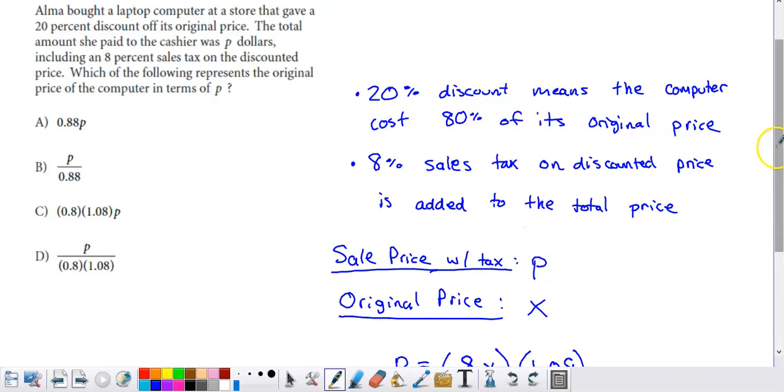So what I did is I kind of defined a new variable for myself, X, which is going to be the original price of the computer.